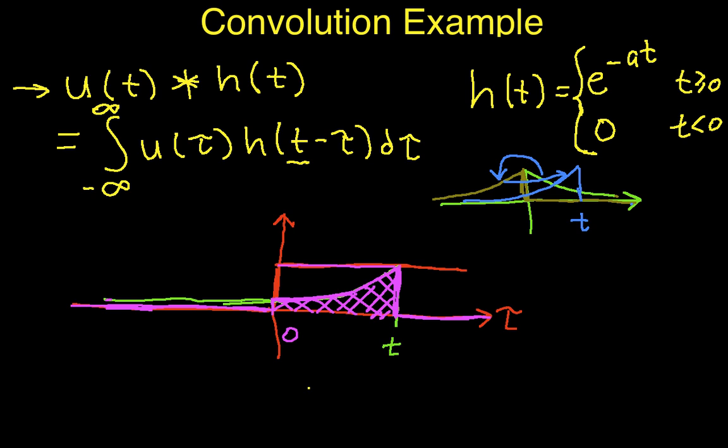So if I do that, it's going to look like this. The integral from zero to t, u of tau is one in this part of the graph. h of t minus tau is e to the minus a t minus tau.